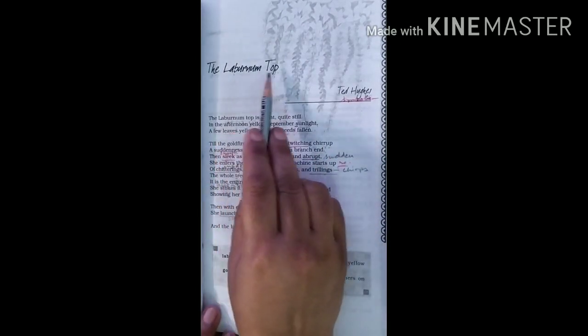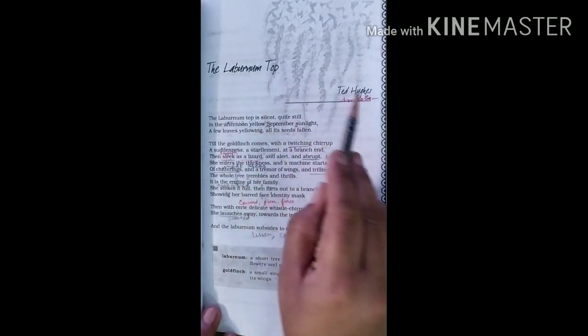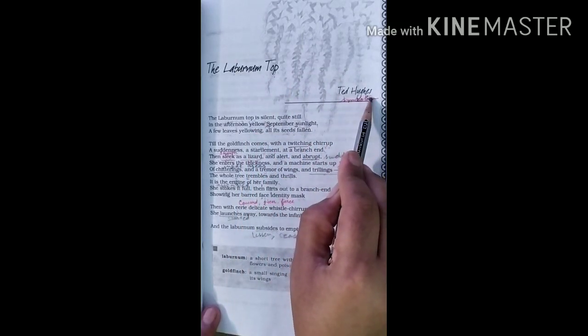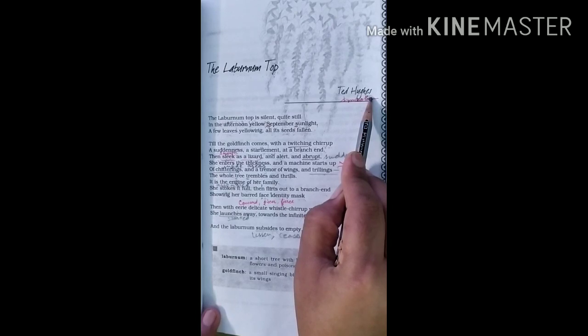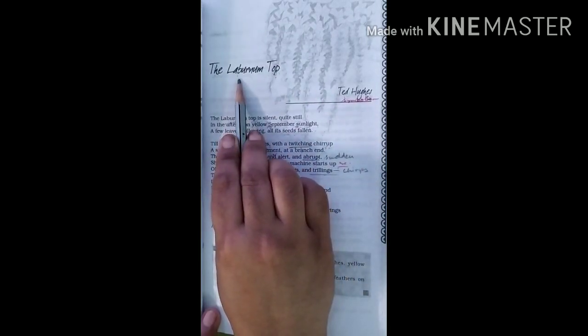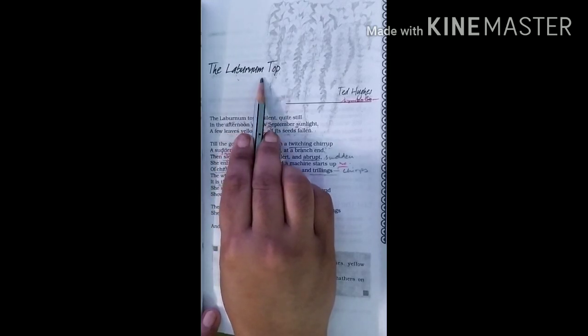The poem Laburnum Top by Ted Hughes describes the mutual relation between a Laburnum tree and a goldfinch. Both of them are yellow in color and quite beautiful in appearance. The tree is yellow because of its flowers.